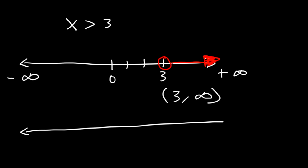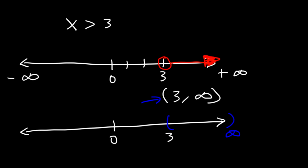Some textbooks may plot it like this on a number line. Instead of using an open circle, you might see a parenthesis at 3. If this was a bracket, you would see the bracket on a number line. So you can also plot it this way as well.